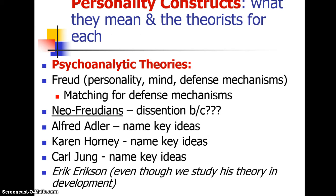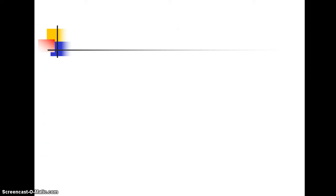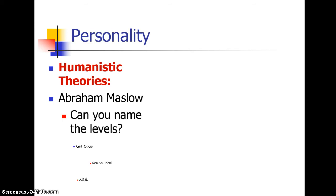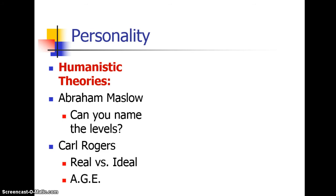Continuing with humanistic theories — we've talked about these before. Maslow several times: make sure you can describe the hierarchy of needs. Rogers — we just talked about him with therapy — make sure you understand the real self versus the ideal self, and the ideas of acceptance, genuineness, and empathy.